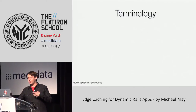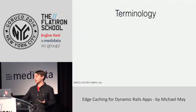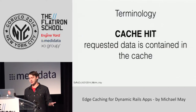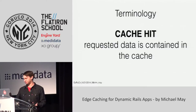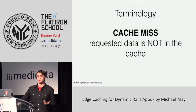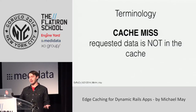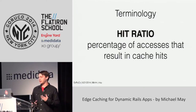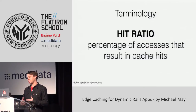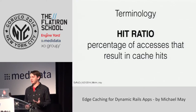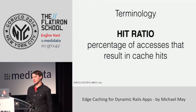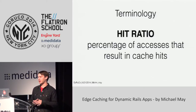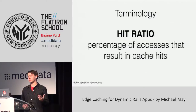Let's define some terminology. The first is cache hit — this is when requested data is contained in the cache. The inverse is a cache miss, which is when the data is not in the cache. There's also the hit ratio, which is the percentage of accesses that result in a cache hit. The higher your hit ratio, the better performance you're going to see.